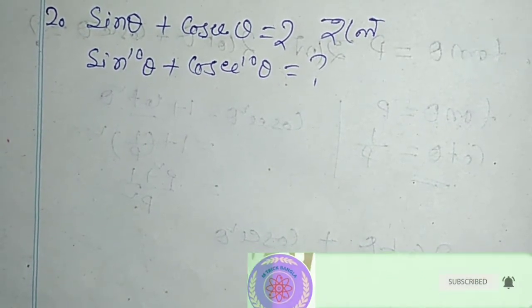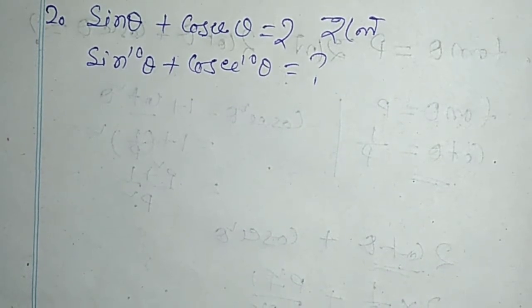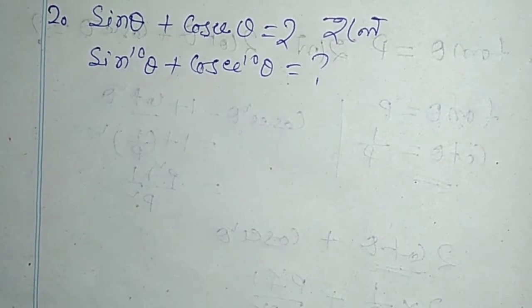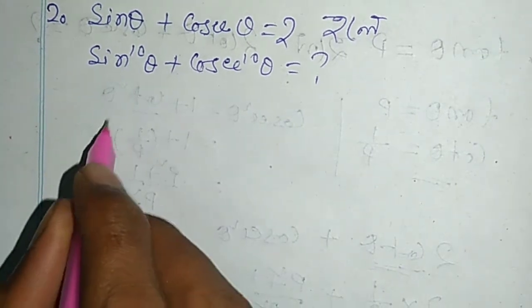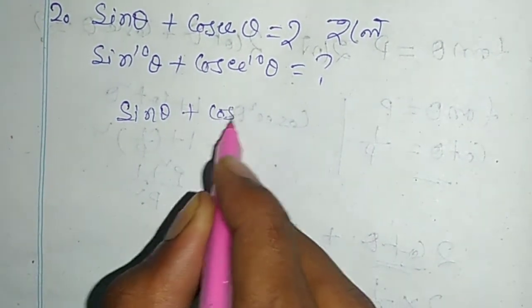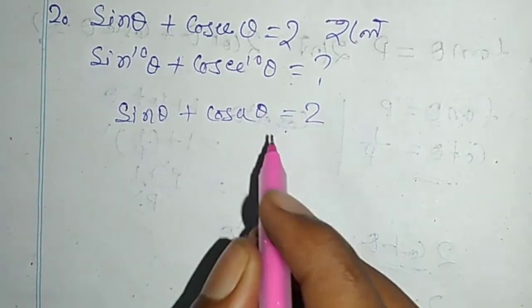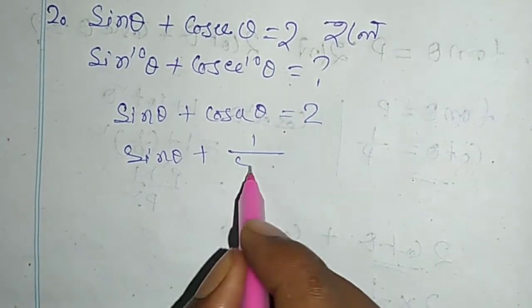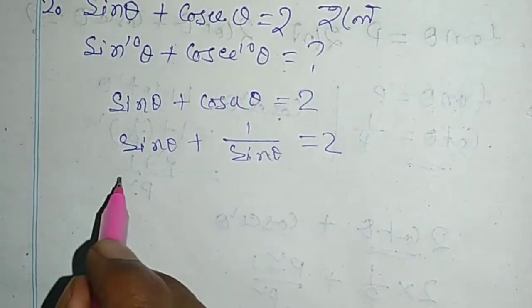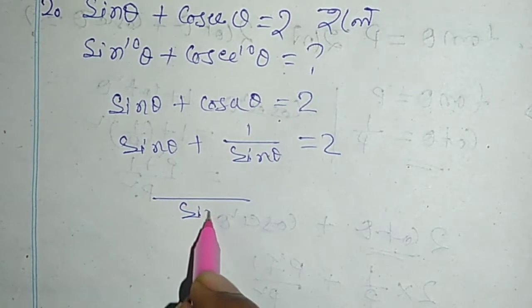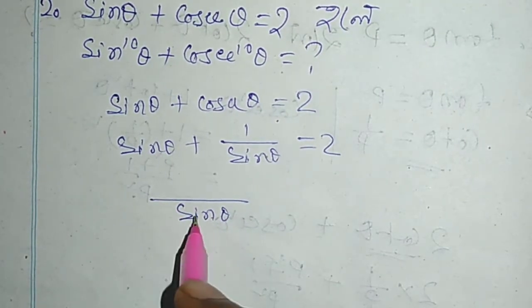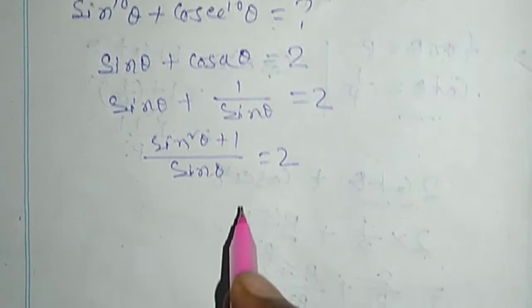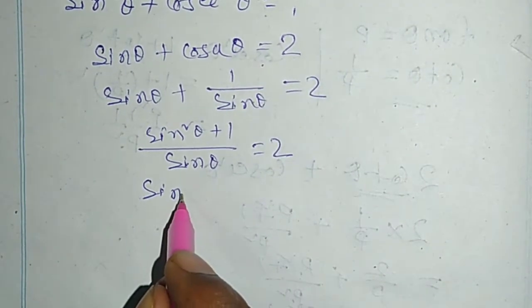Next problem. sin θ + cosec θ equal to 2. Find sin^10 θ + cosec^10 θ. sin θ plus cosec θ equal to 2. sin θ plus 1 by sin θ equal to 2.